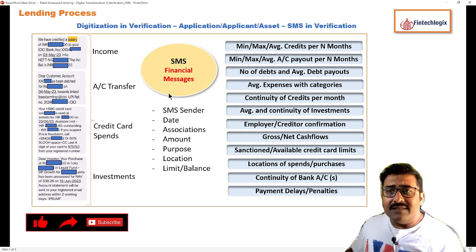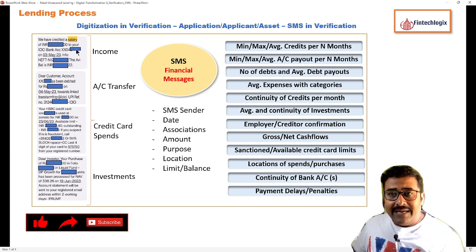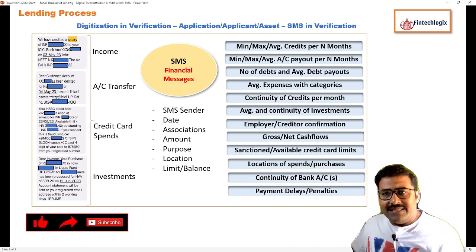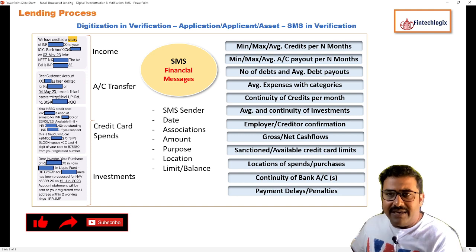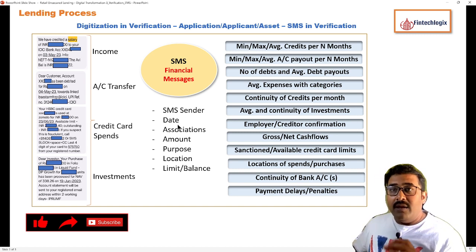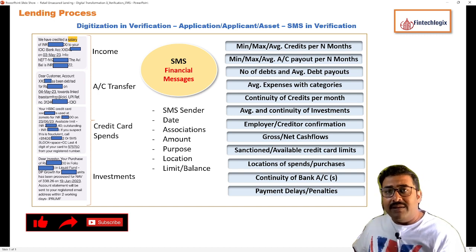Now, in financial messages, what details are important for credit underwriting? First, the SMS sender — who is sending it. Someone might commit fraud by sending the same salary content from another number, but if it is from an ICICI Bank or HDFC Bank registered sender, it makes it an authentic one. Second, the date — to decide the analysis period, whether last 3, 6, or 9 months, to determine when a transaction happened.